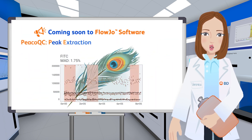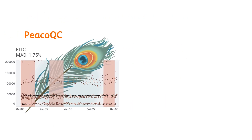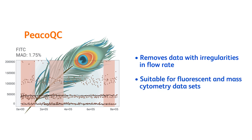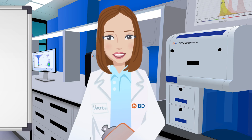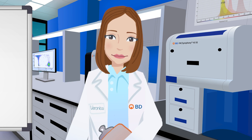Coming soon to Flow Joe is Peacock, a new automated cleanup tool. Like FlowAI and FlowClean, Peacock inspects and removes anomalies caused by changes in flow rate over time, while also flagging parameters with signal instability. This tool has also been optimized for use with both fluorescent and mass cytometry datasets. To learn more about these cleanup tools, take a look at the accompanying publications.